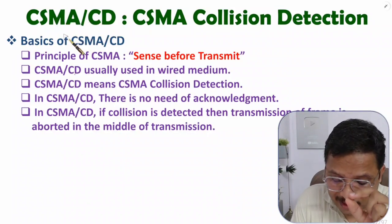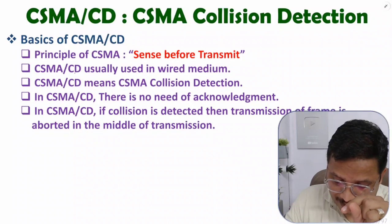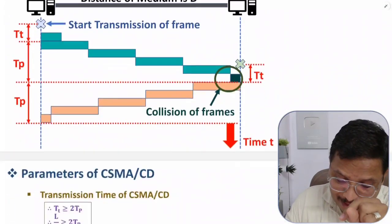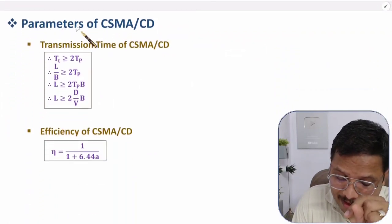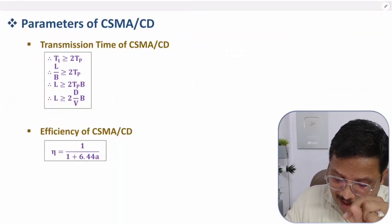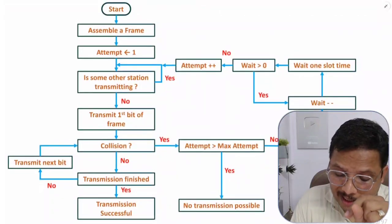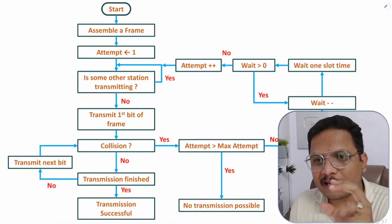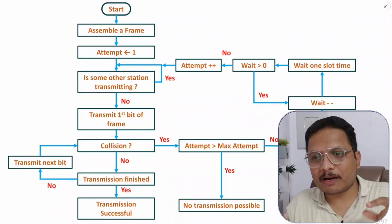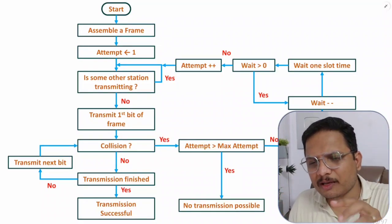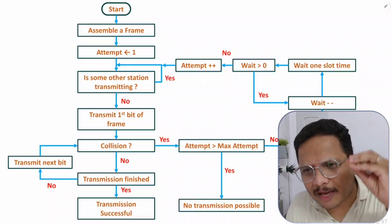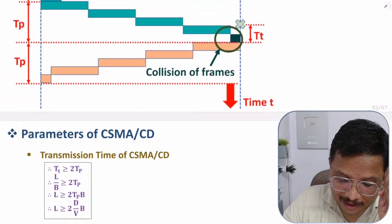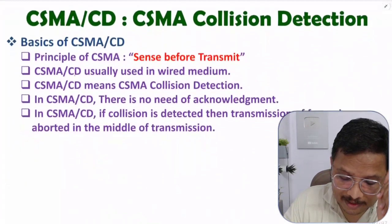For CSMA/CD, first I will explain the basics, then how many methods are there for collision detection, then how many parameters are there with CSMA/CD, and at last how the working is done along with a flowchart. At first look you might think this flowchart is very big, but once you see this video you will find it is a very easy flowchart.